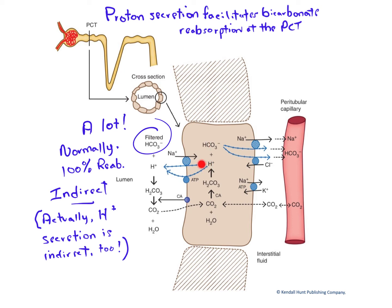The protons are transported back into the tubular fluid by two mechanisms: a sodium proton countertransporter or antiporter and also a proton pump. The proton pump is primary active transport. It pumps protons against their gradient and requires the energy from ATP to do so.